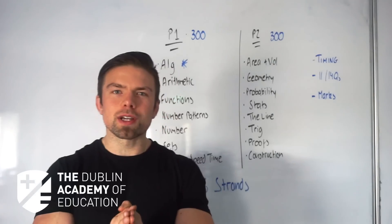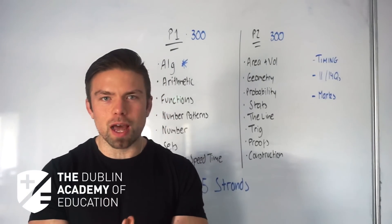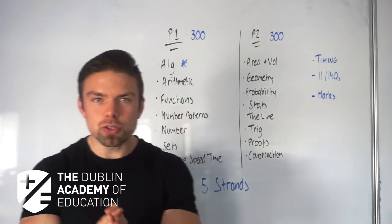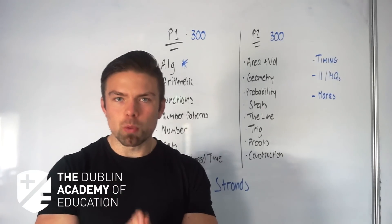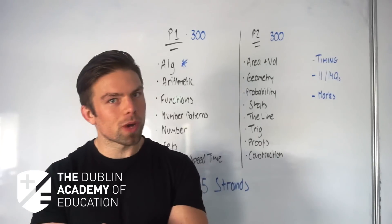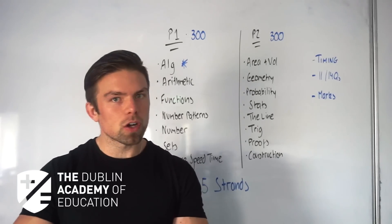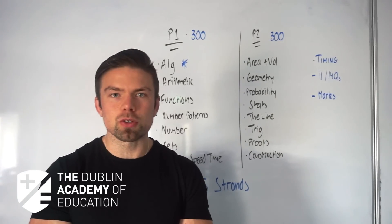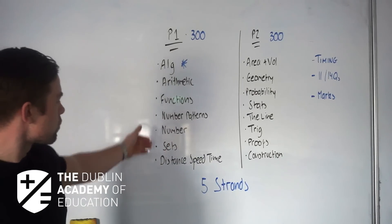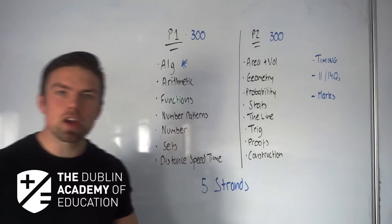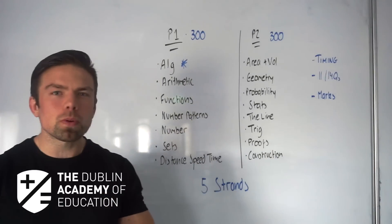Once we actually do that, we start to realize that many of the different parts overlap. In June you're going to see two papers, each worth 300 marks. Paper one before the weekend and paper two afterwards, so you got a nice bit of time to revise over that weekend. Paper one we have algebra, arithmetic, functions, number patterns, number sets, distance speed and time.